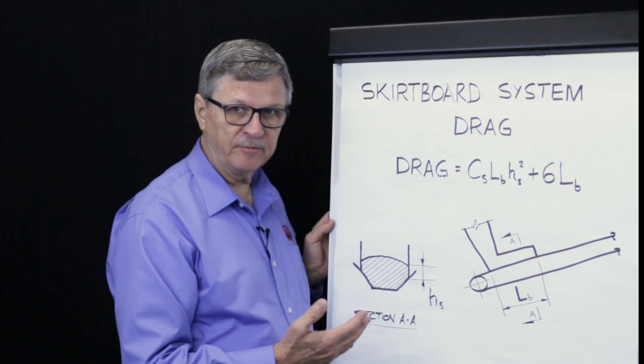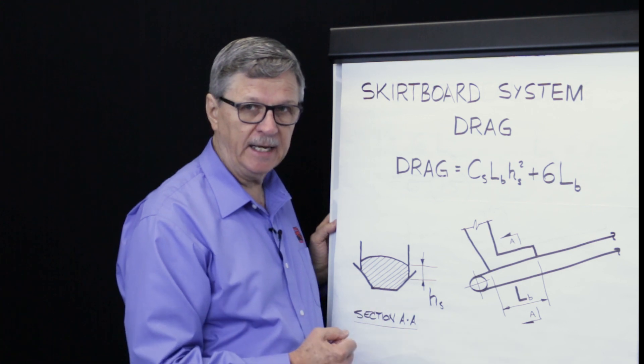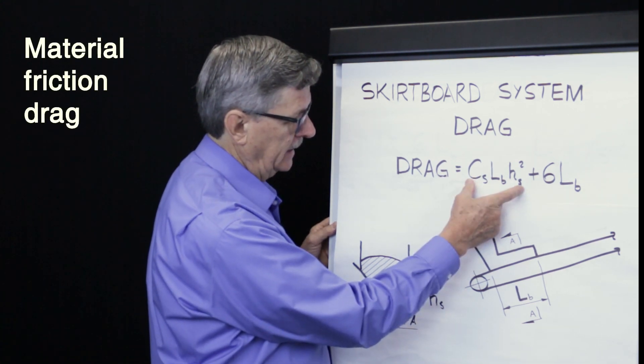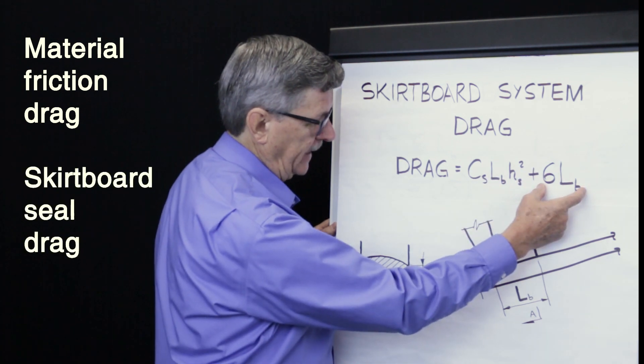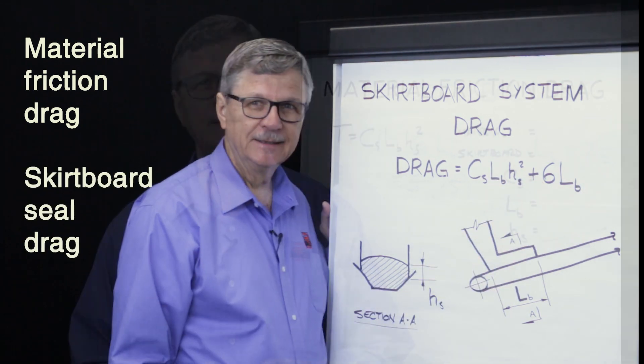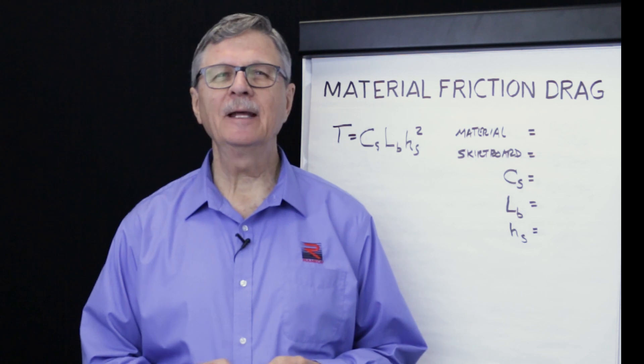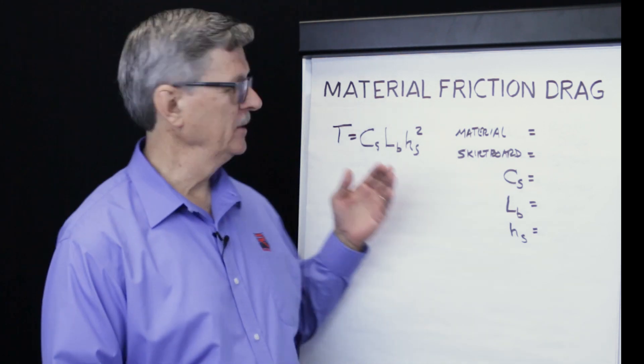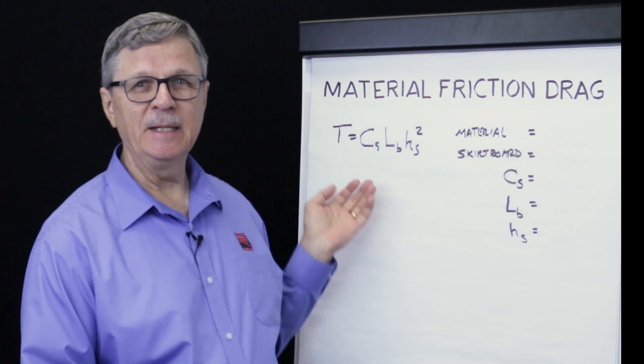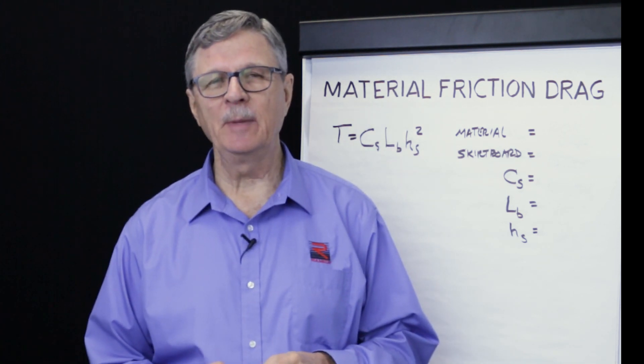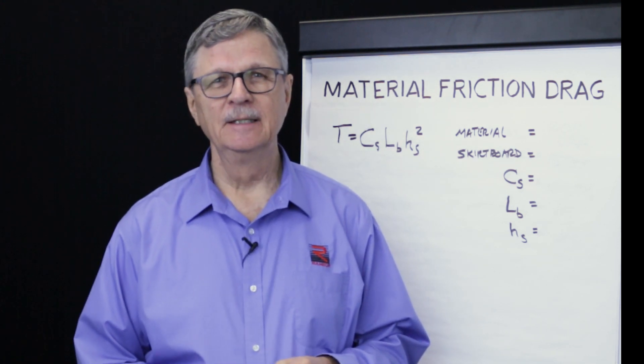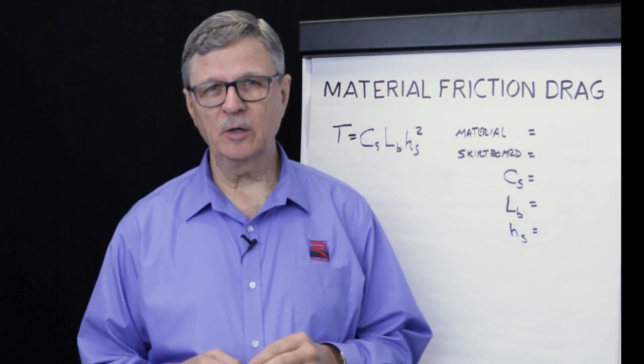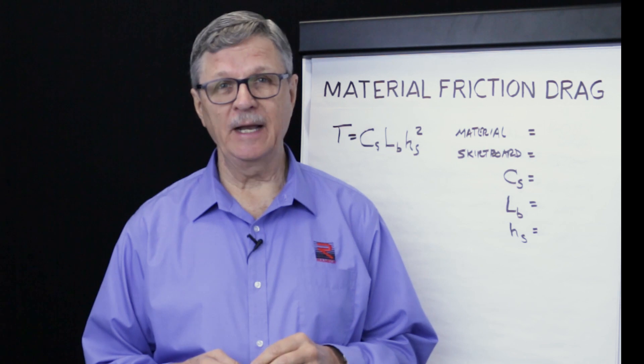The two components of friction that we need to figure out how to calculate are material frictional drag and skirt board seal drag. To calculate material frictional drag within the skirt board system, we can use the equation shown here. This has been developed by the Conveyor Equipment Manufacturers Association, who has also published a list of frictional coefficients which can be used for a variety of materials.